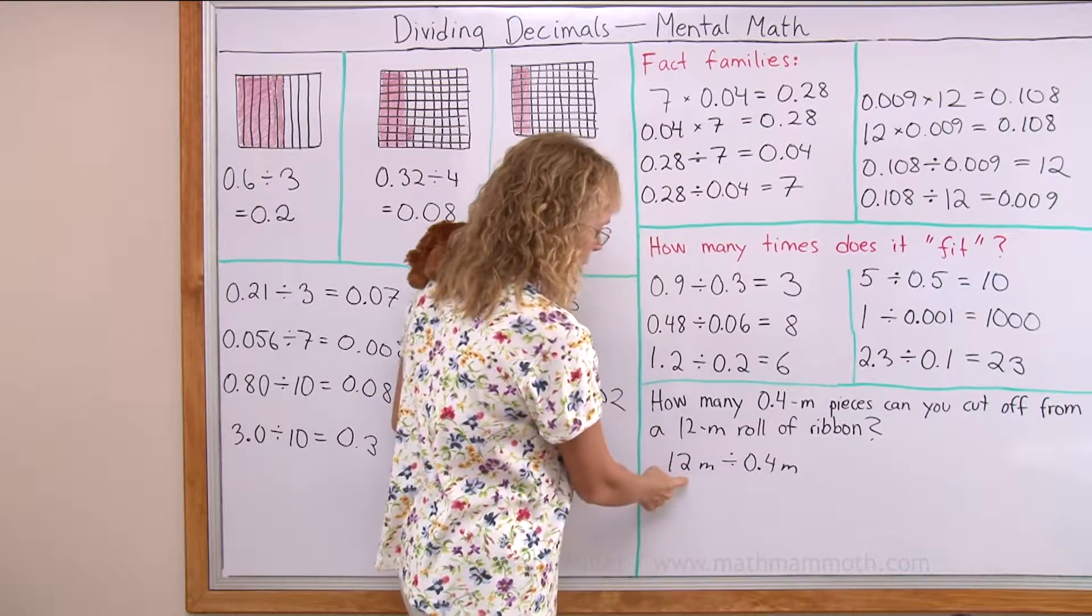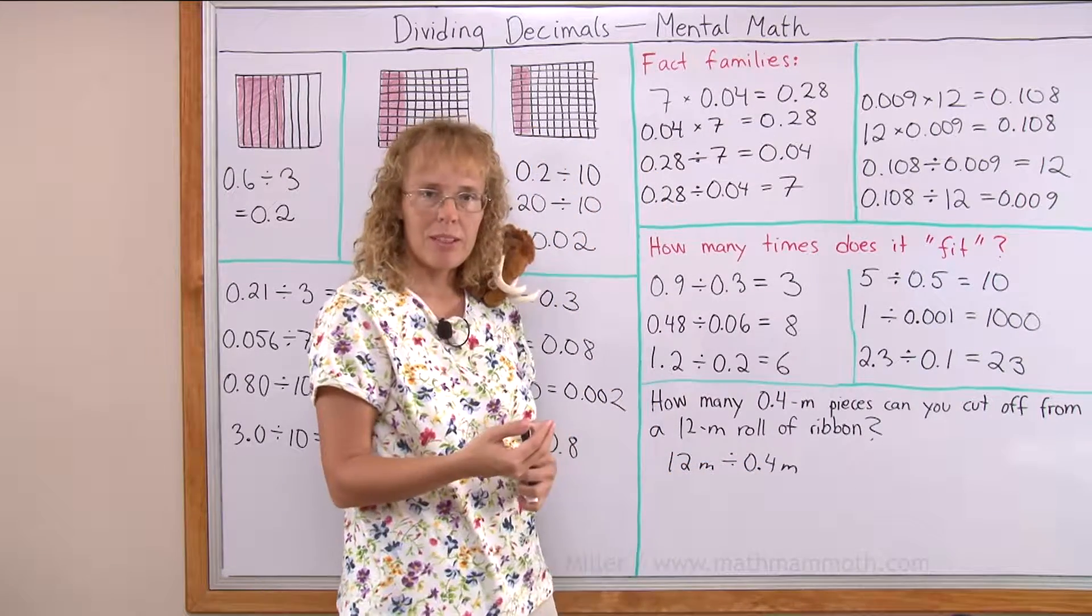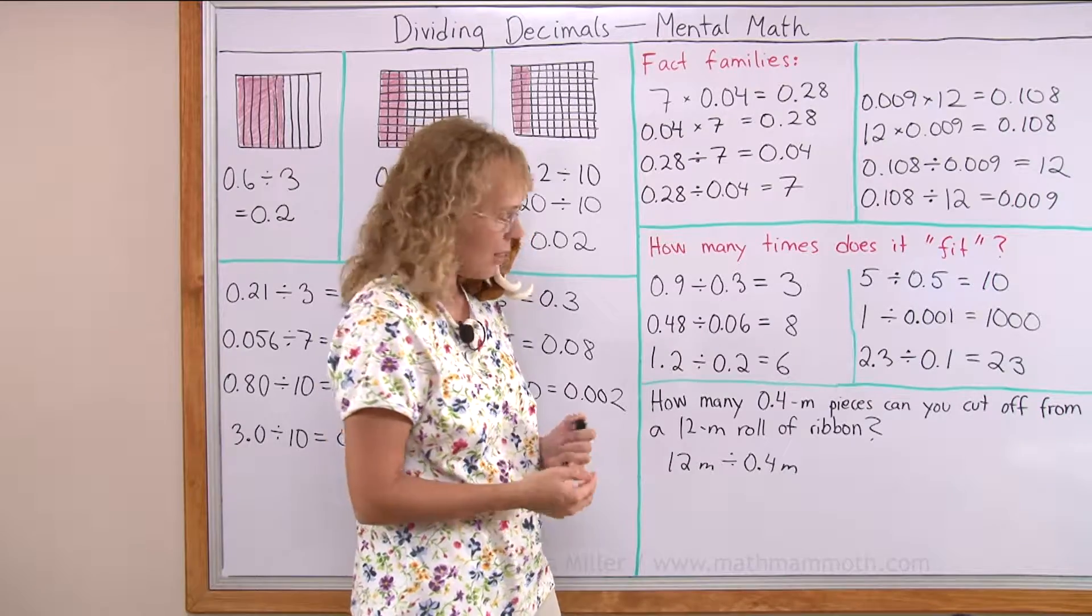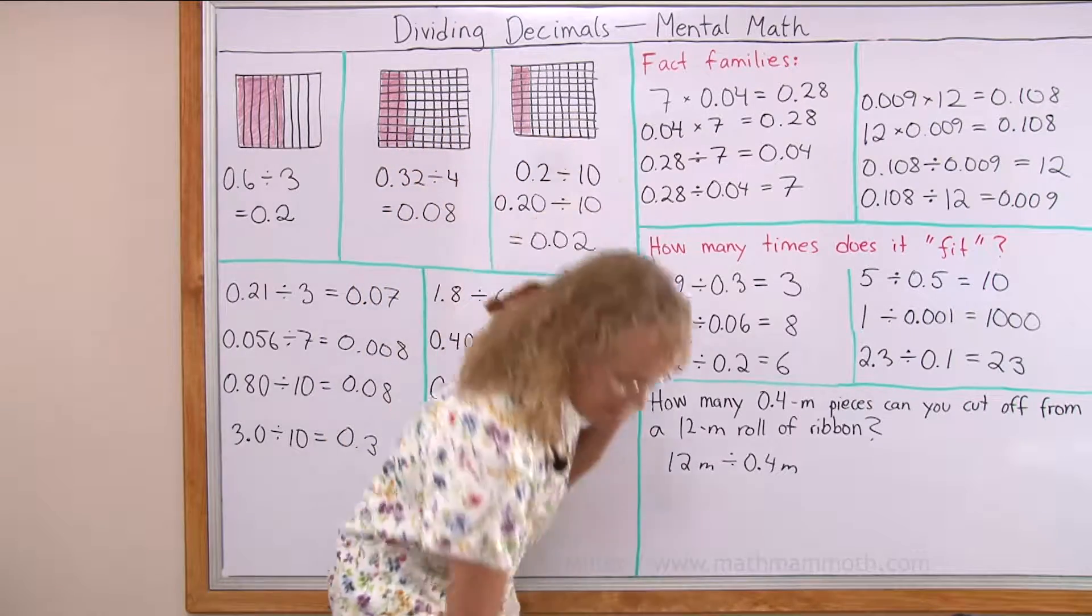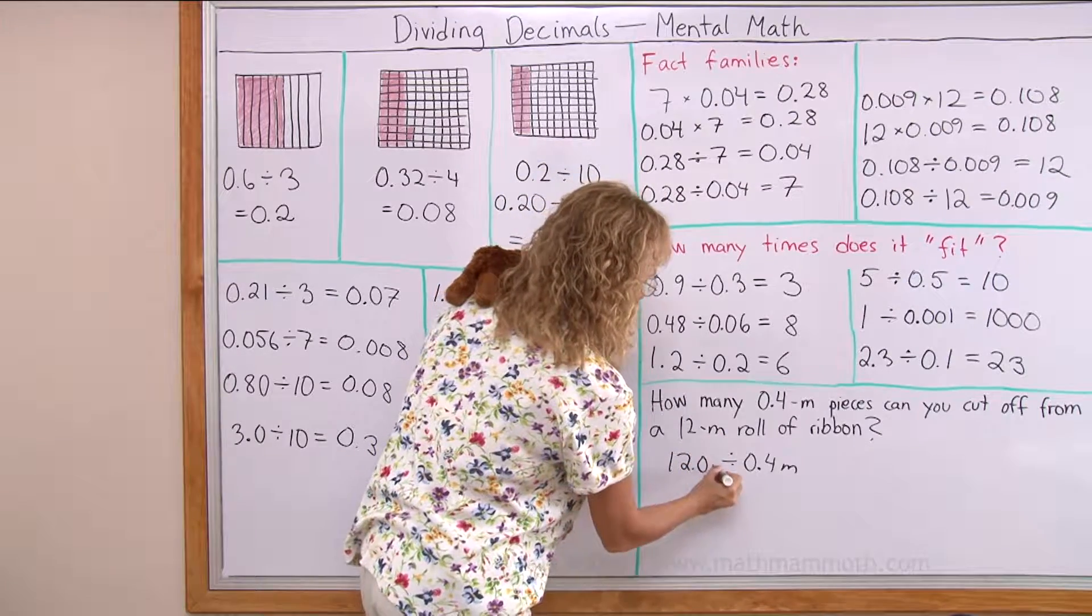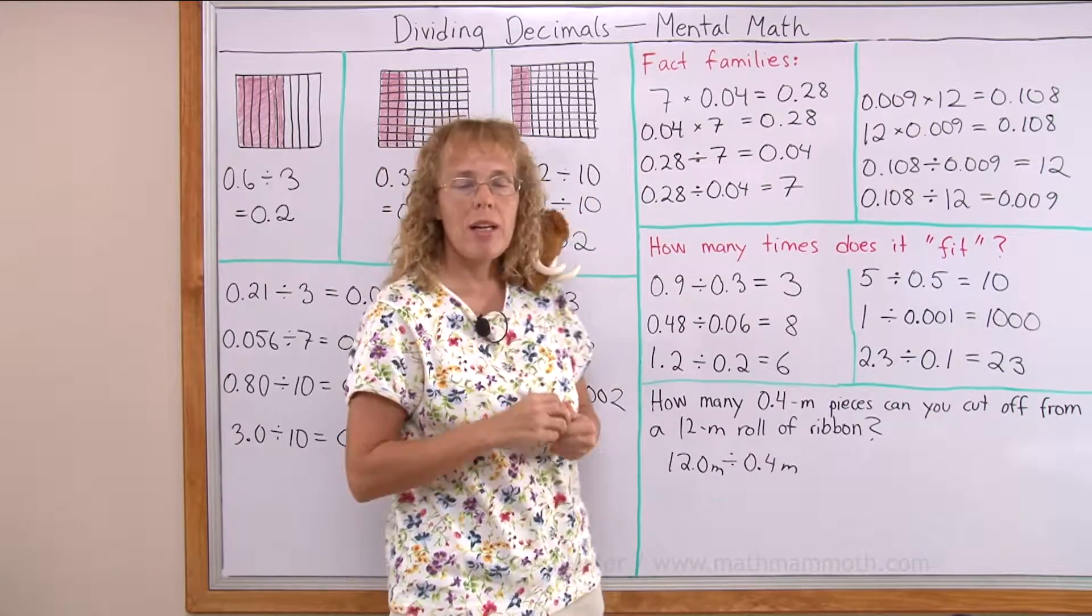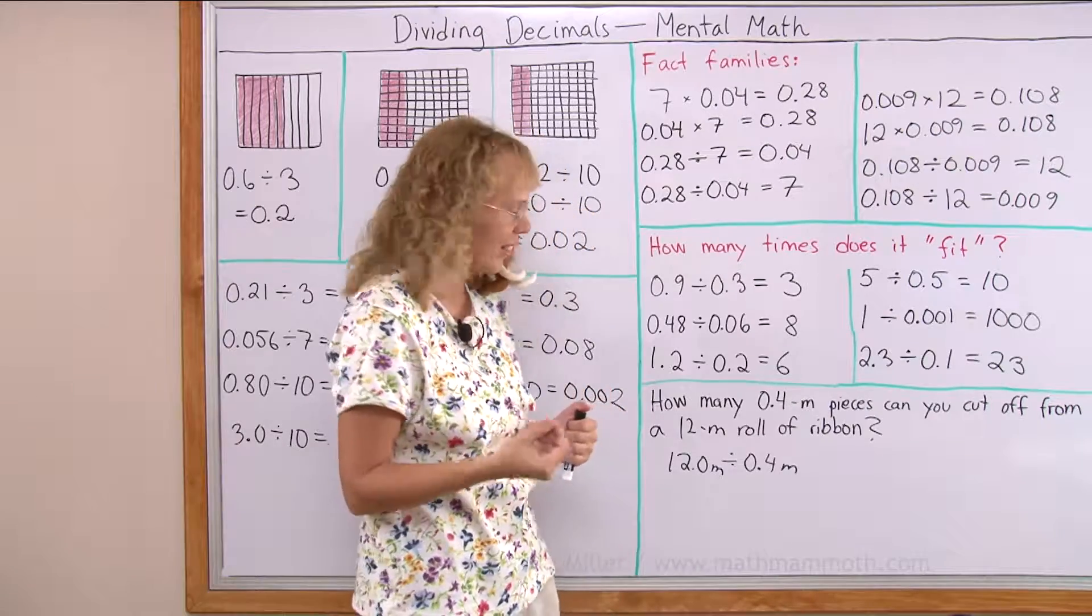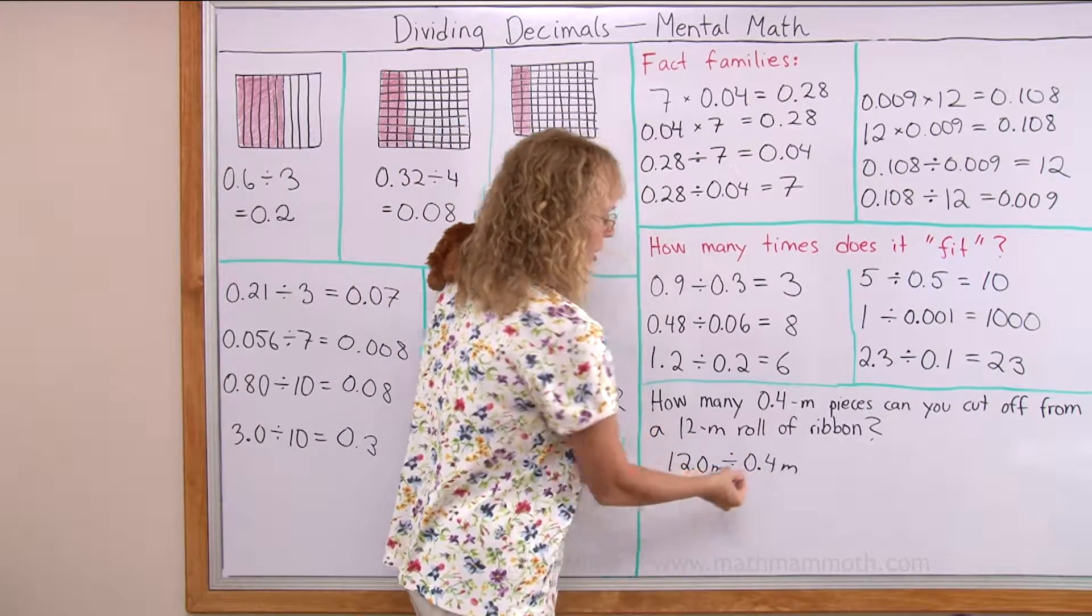It might help if I change this to like this, and I can see that it's going to be 120 tenths, and then 4 tenths.